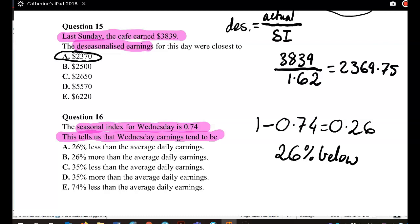So from the examiner's report, I'll read that out exactly. The seasonal index for Wednesday is 26% below the expected average of 1. So our answer there is A, 26% less than the average daily earnings.